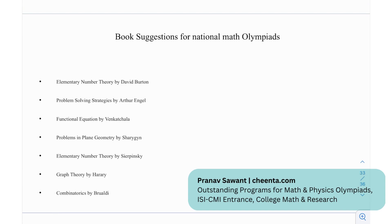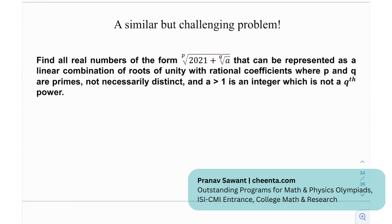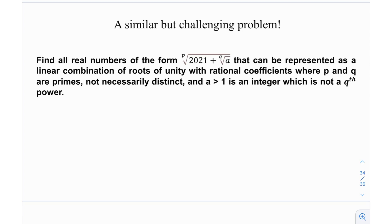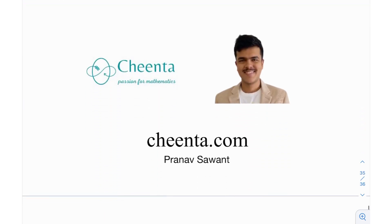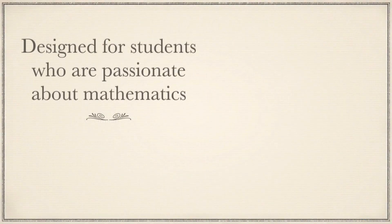Moving on to some book suggestions for National Math Olympiads: Elementary Number Theory by David Burton, Problem Solving Strategies by Arthur Engel, Functional Equations by Penkita Chala, Problems in Plane Geometry by Sharygin, Elementary Number Theory by Sierpinski, Graph Theory by Harary, and Combinatorics by Birvaldi. At the end, we have a challenging problem: find all real numbers of a given form that can be represented as a linear combination of the roots of unity with rational coefficients, where p and q are primes (not necessarily distinct), and a > 1 is an integer which is not a qth power. Try it out — it's a very interesting problem. If you're able to do it, let me know. Until then, I'll see you in the next video. Thank you very much and bye bye.